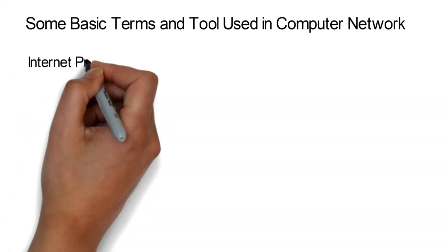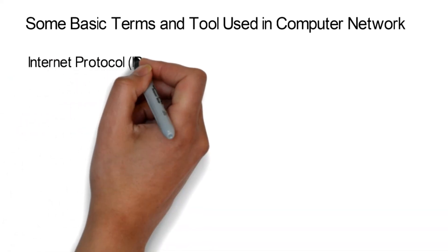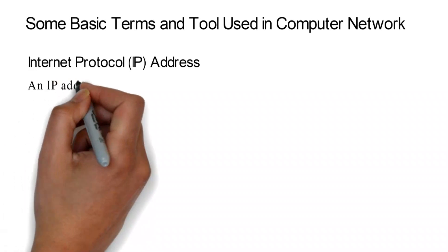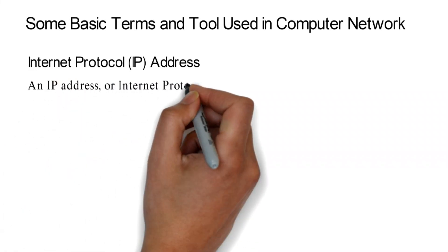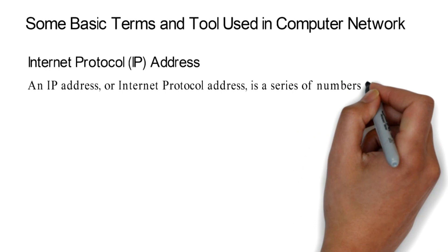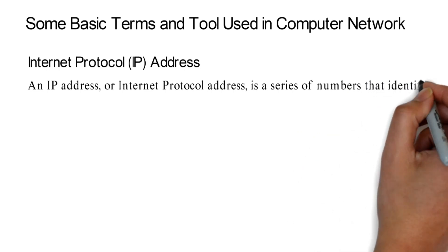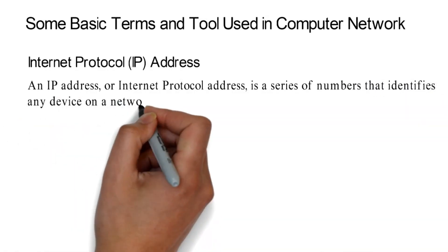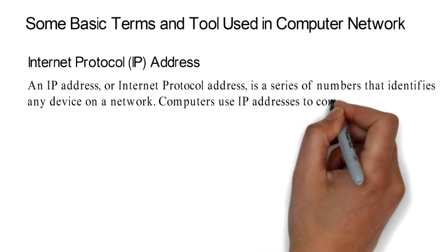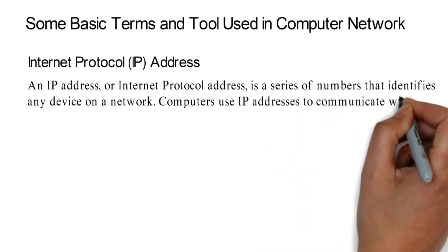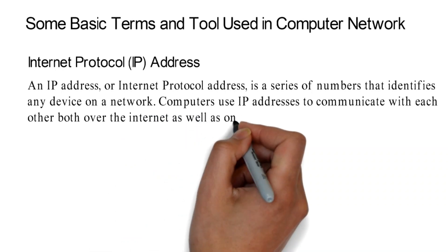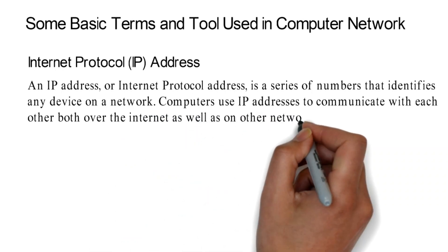Some Basic Terms and Tools Used in Computer Networks. IP Address: An IP address, or Internet Protocol address, is a series of numbers that identifies any device on a network. Computers use IP addresses to communicate with each other both over the Internet as well as on other networks.